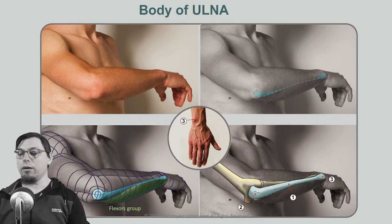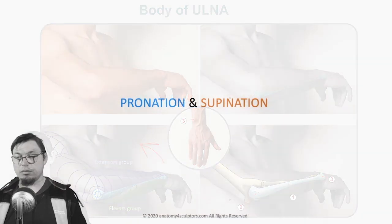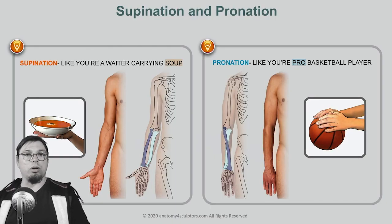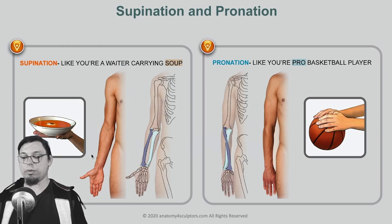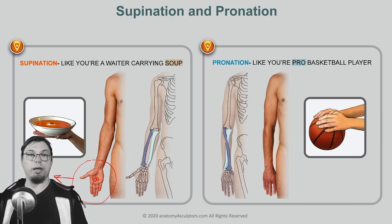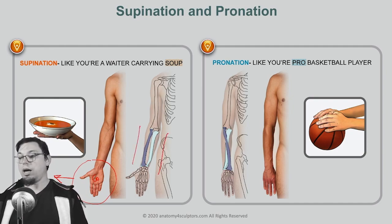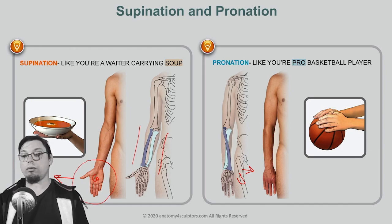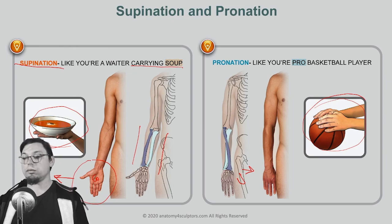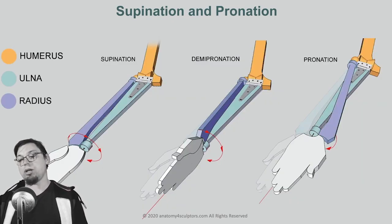Now let's talk about pronation and supination. In anatomical position the arm is supinated — thumb pointing laterally, palm facing forward. Supination is when the palm faces up toward the sky. A helpful memory trick: supination is like carrying a bowl of soup, and pronation is like a basketball pro dribbling — palm facing down.